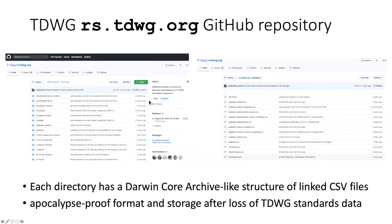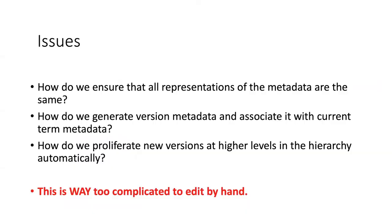The place where the magic lives is the rs.tdwg.org GitHub repository. Each directory in the repository has a Darwin Core archive-like structure of CSV files. This is a sort of apocalypse-proof format for storing data. We have actually had cases in the past where TDWG standards have been lost, and the idea here is that we have very simple and easily understandable forms of the data in a very secure place: GitHub. One of the things you may be getting from this description is that it's way too complicated to think about doing these sorts of changes by hand. Let's take a look at how you can create a vocabulary using a spreadsheet.